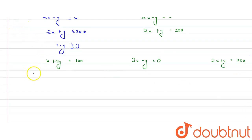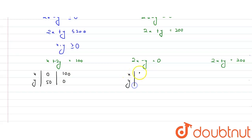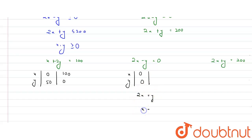For Equation 1 (x + 2y = 100): putting x = 0 gives y = 50, and putting y = 0 gives x = 100. For Equation 2 (2x − y = 0, i.e., y = 2x): putting y = 100 gives x = 50, so the point is (50, 100).